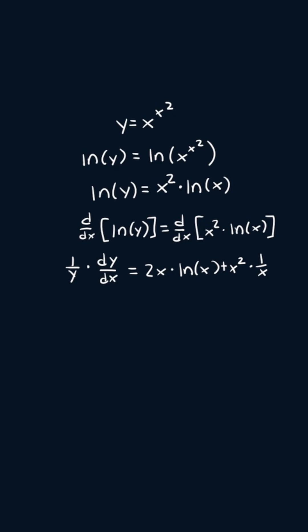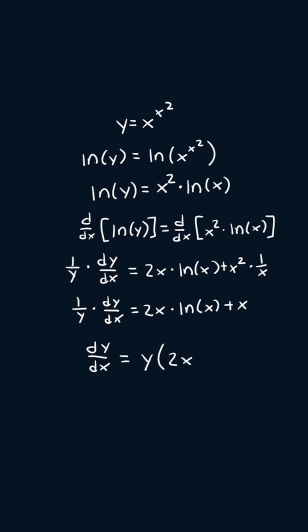So one over y times dy/dx equals two x times the natural log of x plus x. Now we can multiply both sides by y, giving us dy/dx equals y times the quantity two x times the natural log of x plus x.